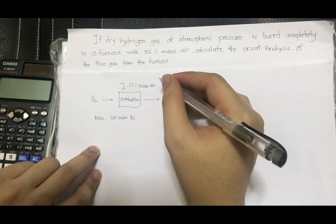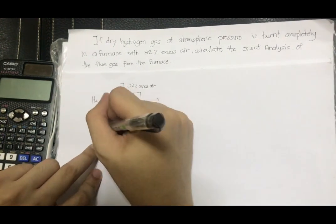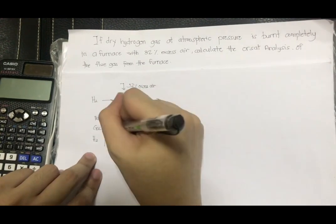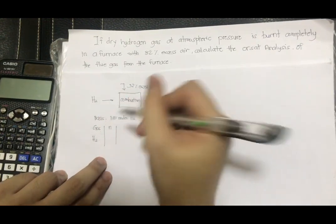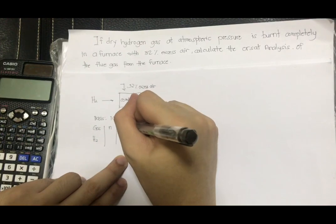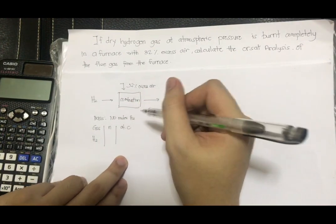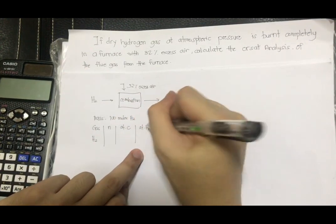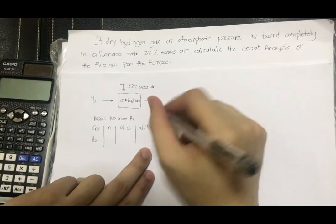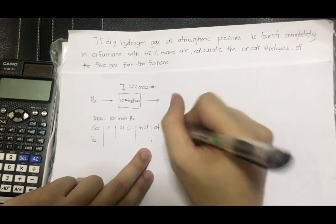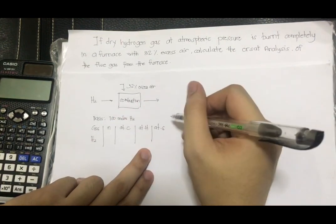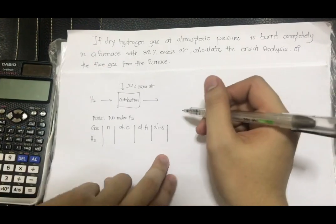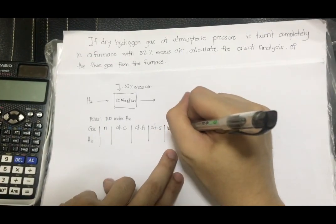So next step is to make a table so we can understand better. When we make a table, it is composed of the gas column. So the gas we have is H2. Next is the moles column. Next is at C, or moles of C in our fuel. Next is at H, or moles of hydrogen in our fuel. Next is at S, moles of sulfur in our fuel. And then, the last one is our moles of O2.